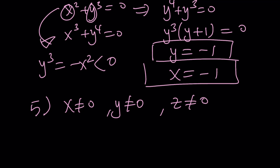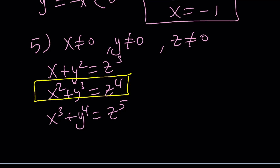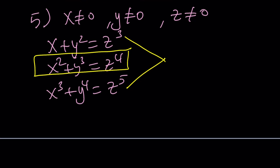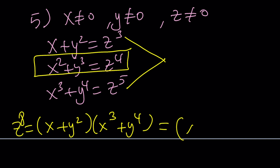Here's what we're going to do. Let me rewrite the system: x plus y squared equals z cubed, x squared plus y cubed equals z to the fourth, and x cubed plus y to the fourth equals z to the fifth. If you take the second equation and square it, you get z to the eighth on the right-hand side. If you multiply the first and third equations, you also get z to the power eight on the right-hand side. So we'll multiply the first and third equations, setting that equal to the square of the second equation.